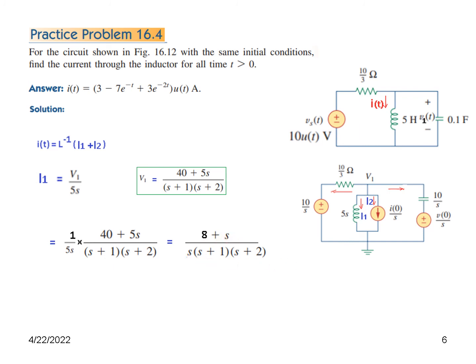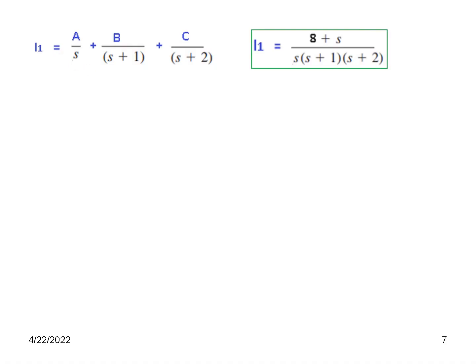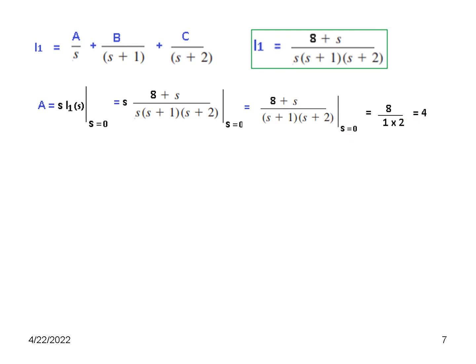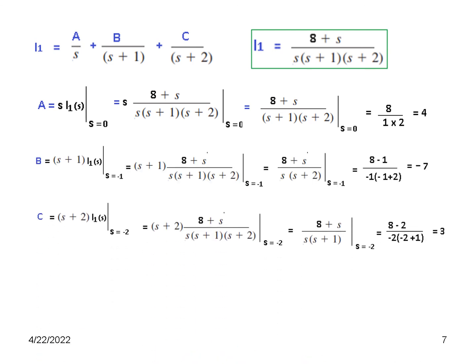Applying the partial fraction method, I1(S) has the form A over S, plus B over S plus 1, plus C over S plus 2. Solving for the coefficients: A equals 4, B equals minus 7, and C equals 3.